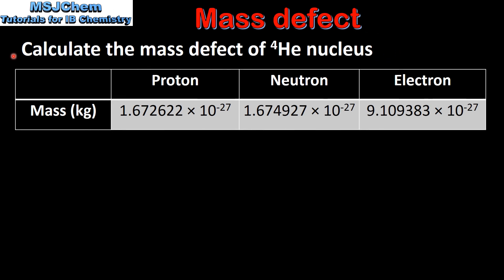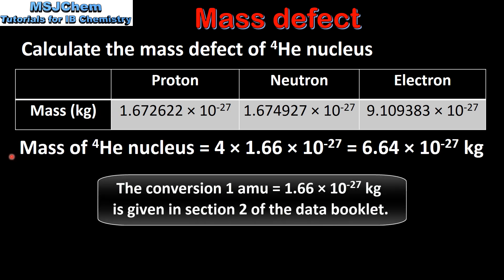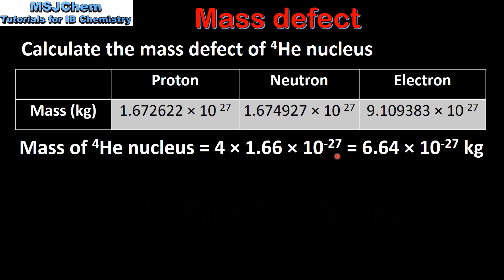Next we'll calculate the mass defect of a helium nucleus. Here we have the masses in kilograms of a proton, neutron, and electron. To calculate the mass of a helium-4 nucleus we multiply the number of nucleons in the nucleus by the mass of one atomic mass unit, which is 1.66 × 10⁻²⁷ kg, giving us a mass for a helium-4 nucleus of 6.64 × 10⁻²⁷ kg.